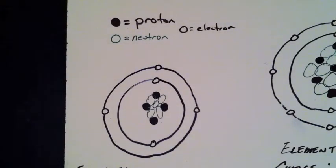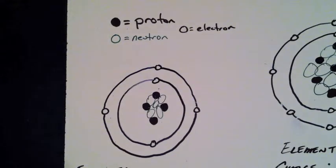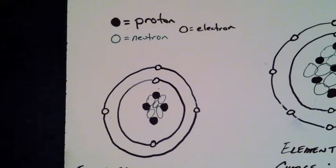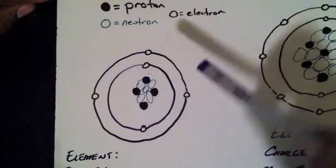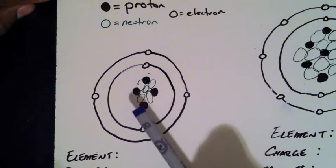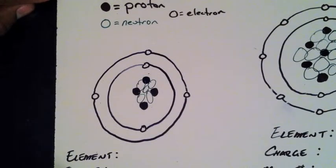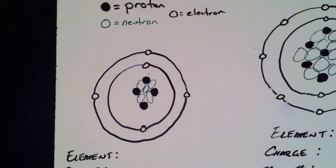Remember that the number of protons determines what an element is — it determines what makes one element different from another. By counting the number of protons in the nucleus you can tell which element is which. Looking at this first example, we have one, two, three, four protons, and if you have a periodic table handy you will see that the element with four protons is beryllium.